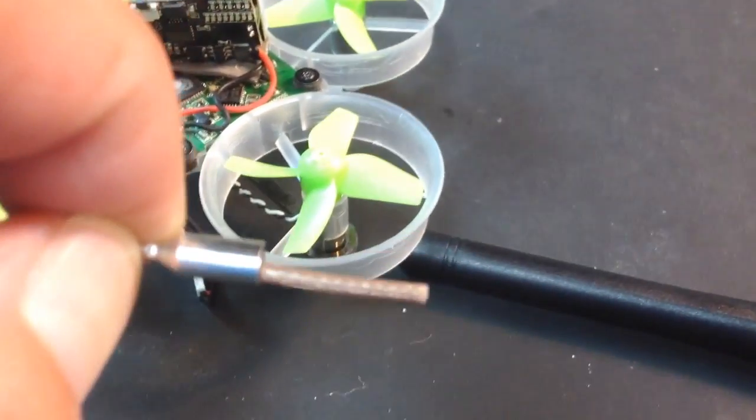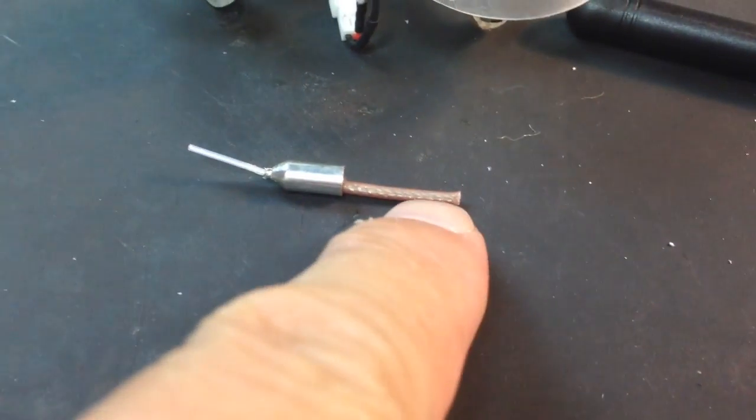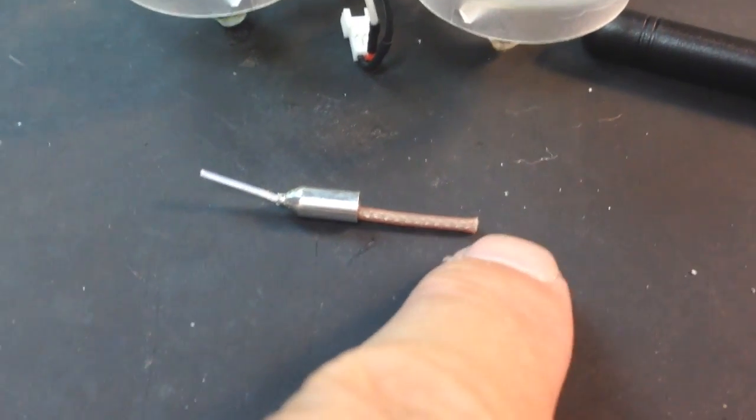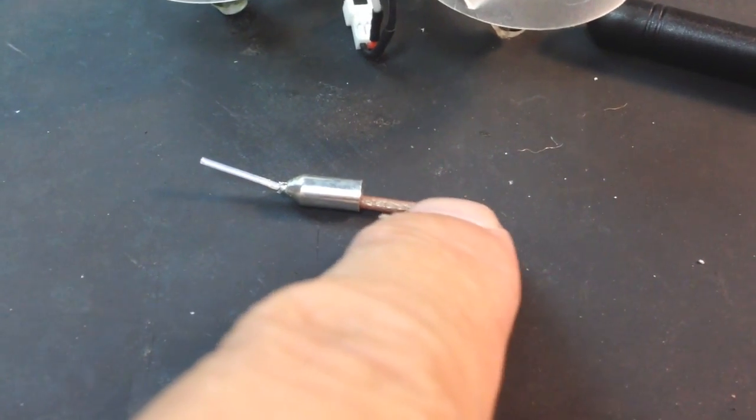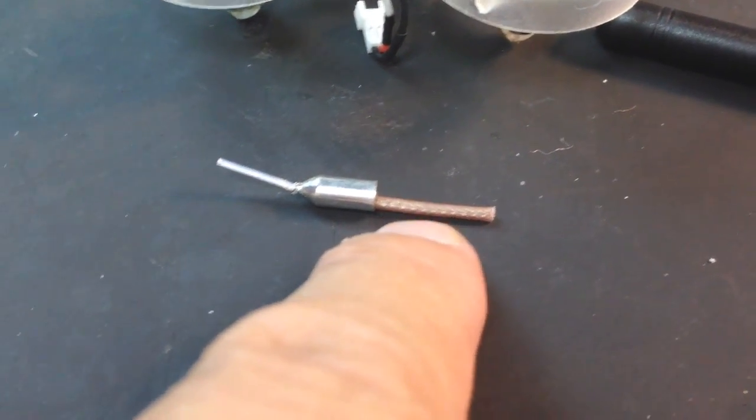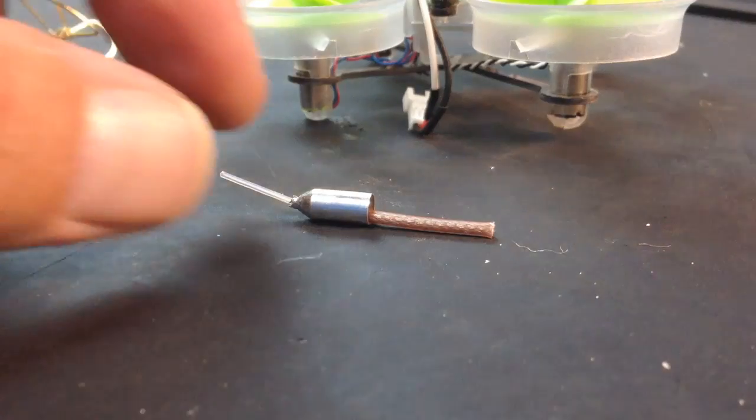I basically just cut off what was sticking out here and I shortened this a little bit. So what I'm going to do is take off about the last quarter inch of this. There will be a braid on the outside and a coaxial cable in the center. Basically, you have to take the braid off and braid it to either side.